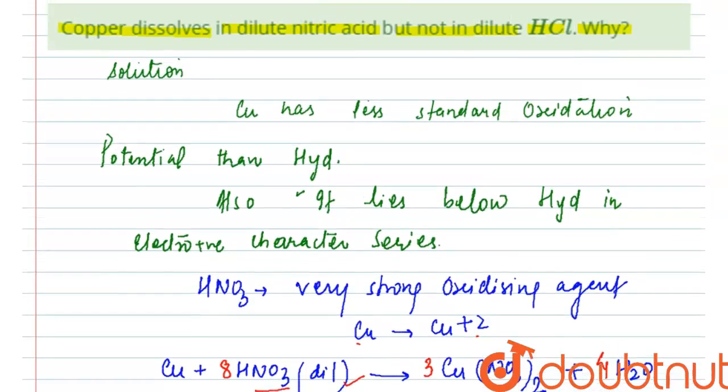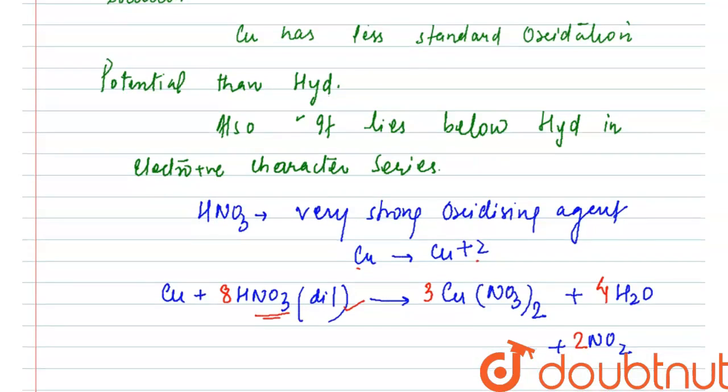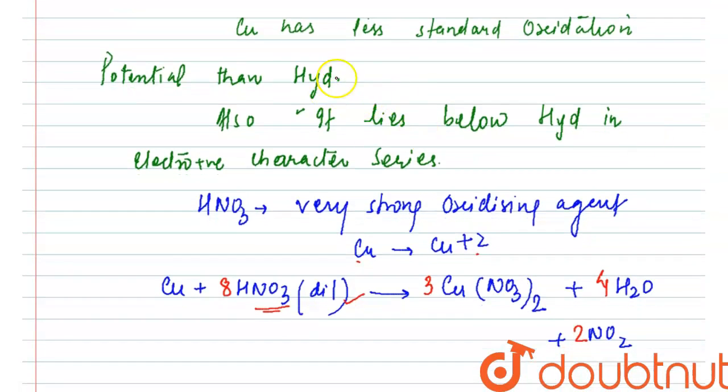But in the case of HCl, the reaction does not happen. Why? Because copper here has less standard oxidation potential than hydrogen. So this is the reason.